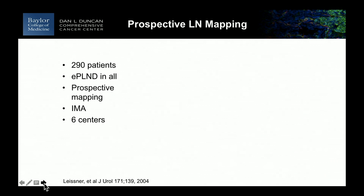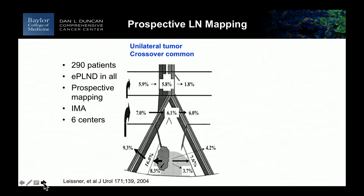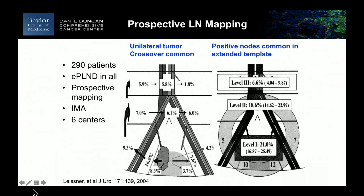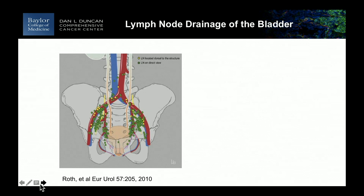This is another paper — a prospective mapping study from the German group, published quite a long time ago, and a very important paper at the time. It shows essentially the same findings with a higher level of evidence regarding the frequency of crossover and the probability of lymph node metastasis in the extended template. It was a clever radionuclide study where they injected tracer into the bladder and mapped out all lymph nodes at the time of cystectomy, using an intraoperative device for identification.